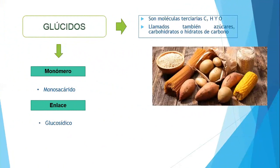Los glúcidos vienen a ser biomoléculas orgánicas. Son moléculas ternarias. ¿Por qué ternarias? Porque están formadas por carbono, hidrógeno y oxígeno — tres elementos químicos de la tabla periódica. También son llamados azúcares, osas, carbohidratos o hidratos de carbono.